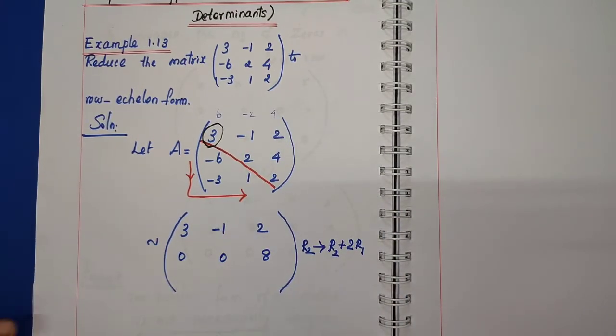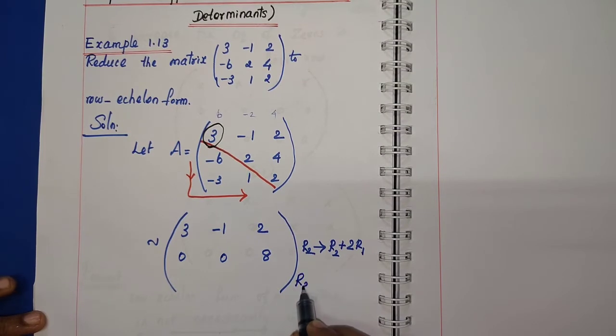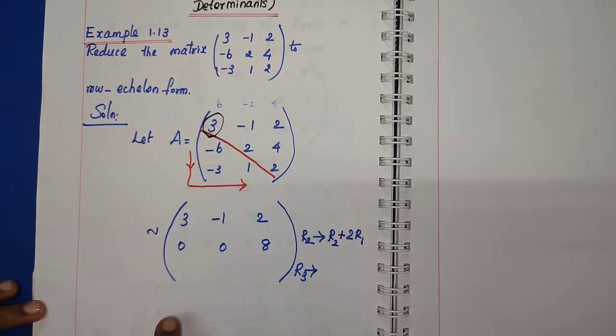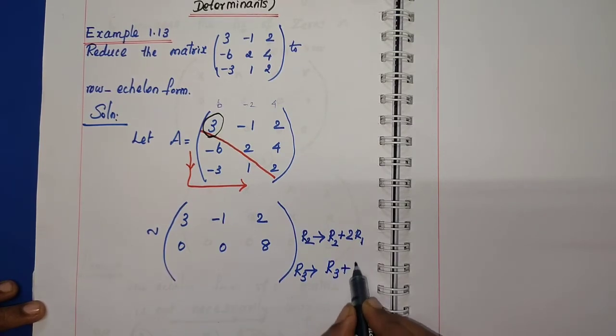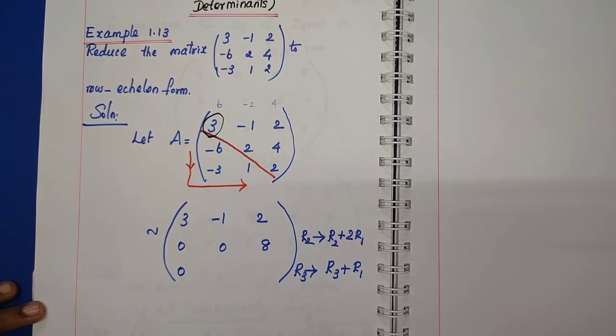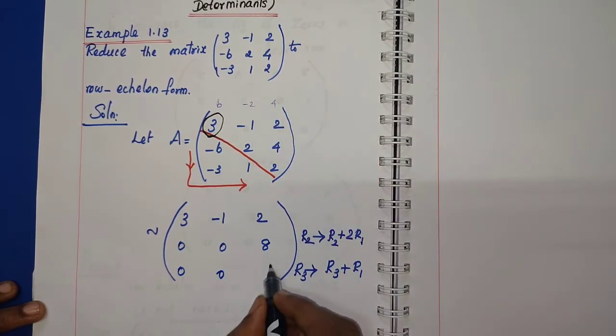Same time, R3 in transformation. R3 implies just R1 could add. R3 plus R1: -3 plus 3 is 0, 1 minus 1 is 0, 2 plus 2 is 4.